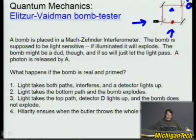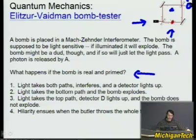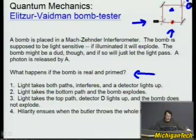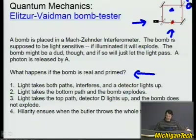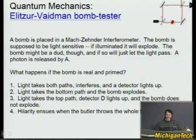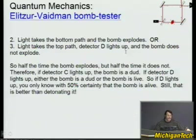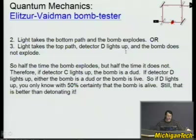A bomb is placed again in the Mach-Zender interferometer. This bomb is light-sensitive and it's alive — if illuminated it will explode. What if the bomb is real and primed? Will light take both paths and a detector light up? Will light take the bottom path and the bomb explode? Will light take the top path, detector D light up, and the bomb not explode? The answer: light takes the bottom path and the bomb explodes, or light takes the top path and detector D lights up and the bomb does not explode. Once you put a live bomb in there, it has to take one path or the other — it can no longer take both paths.